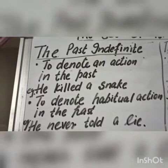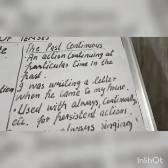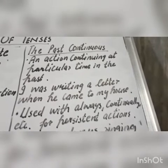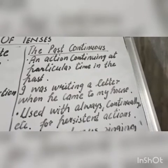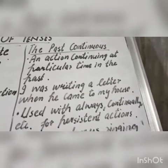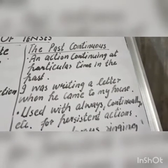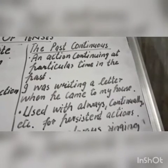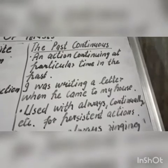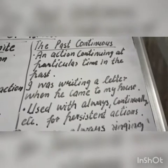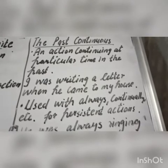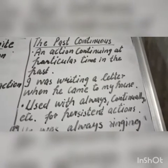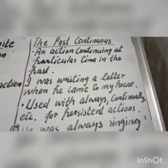Past Continuous Tense: the past continuous is used for an action continuing at a particular time or during a particular period in the past. The chief interest is not the time of action but its continuity. For example, 'I was writing a letter when he came to my house.' It is also used with 'always,' 'continually,' etc. for persistent action or habits in the past. For example, 'He was always ringing me up.'